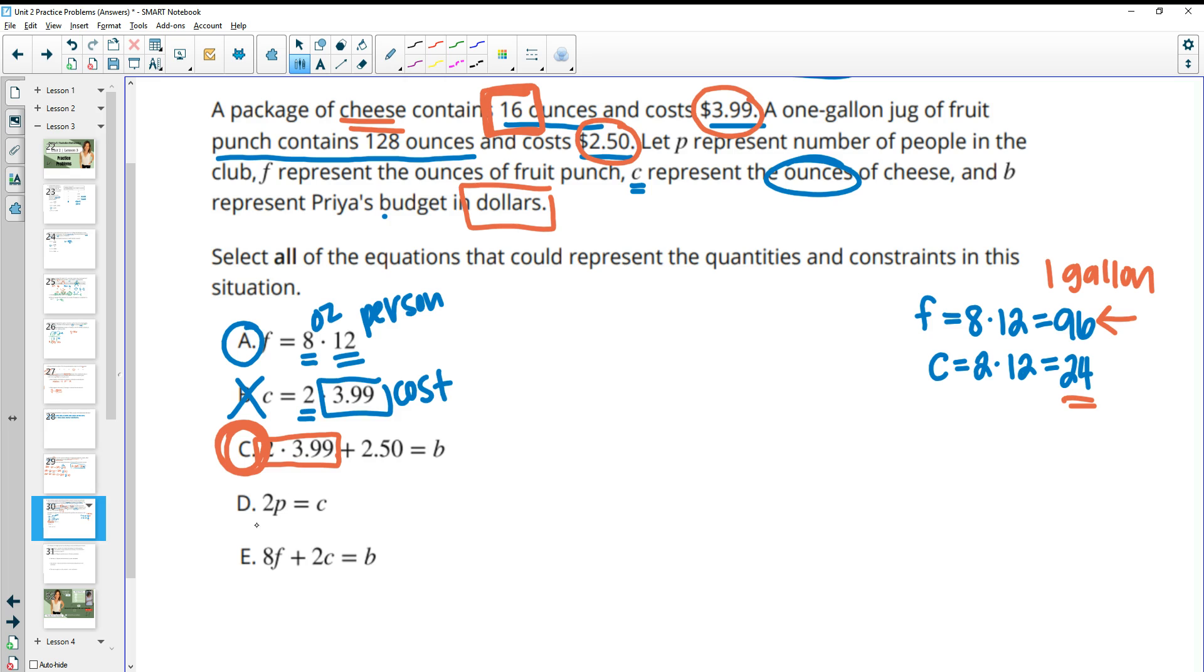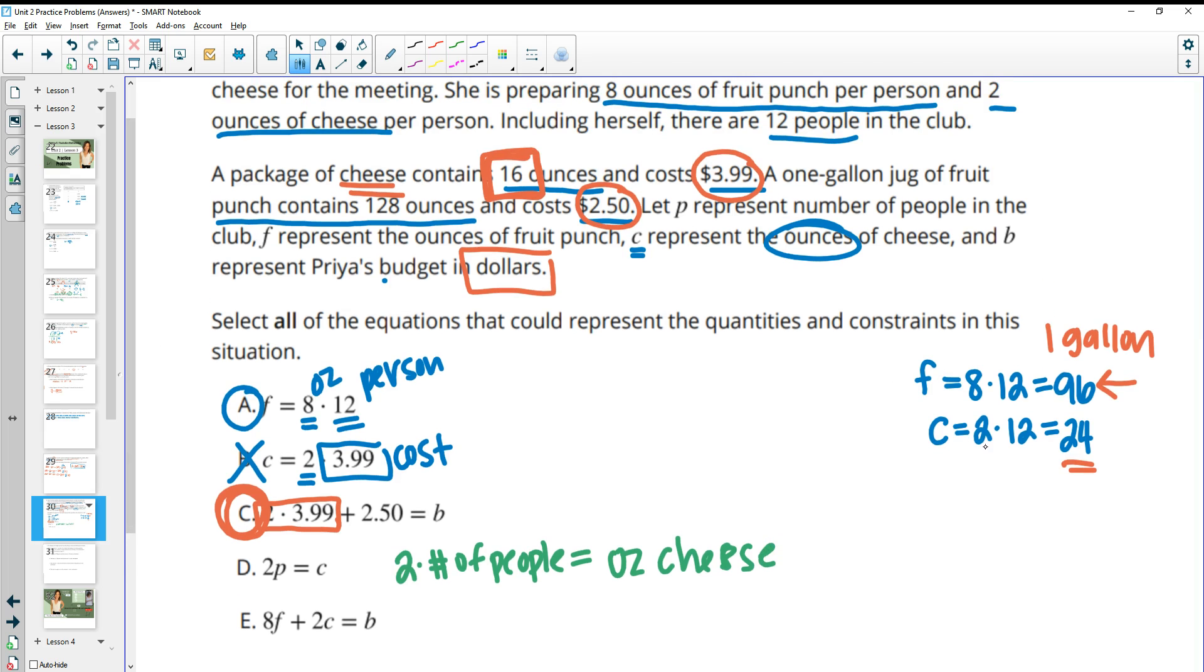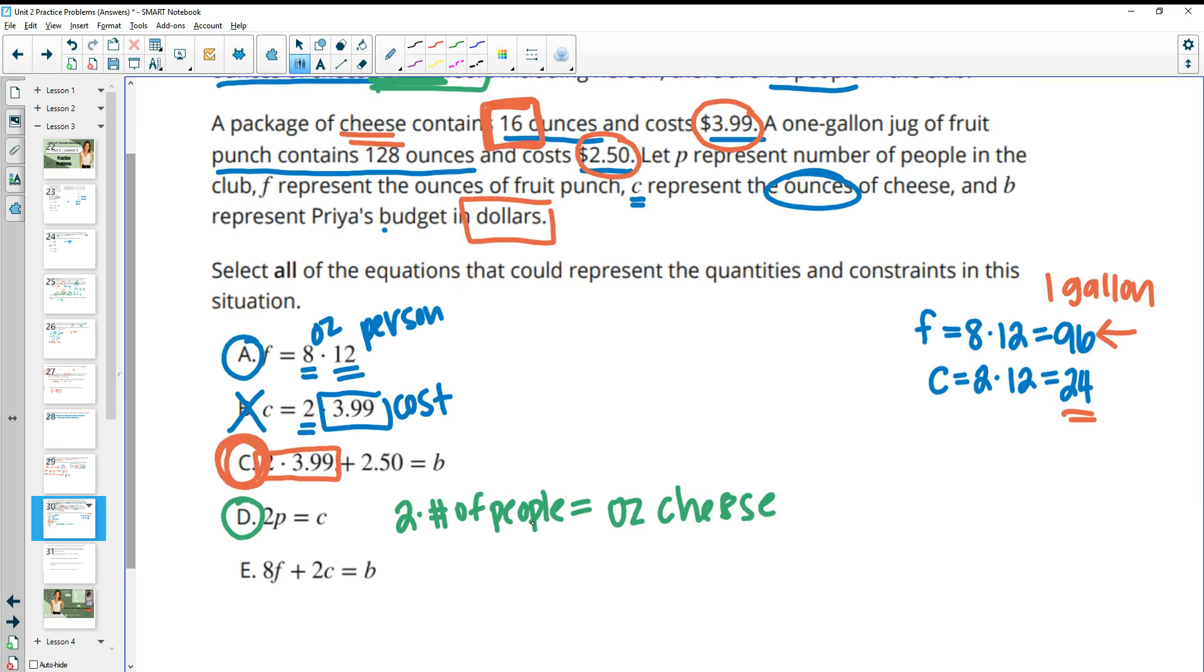Part D tells us that two times the people, so P is people, two times the number of people equals C, the ounces of cheese. And that's correct because we are doing two ounces of cheese per person. So two times P would be the number of ounces of cheese that we need. And then part E uses B again, which is the budget. So we're going to need the money in this equation and we don't have the money in the equation. So E is going to be incorrect.